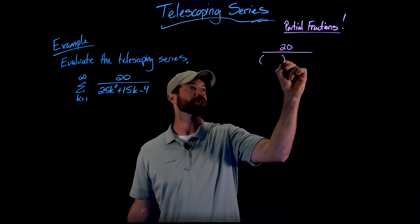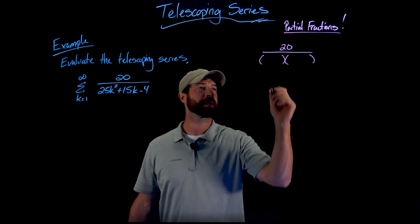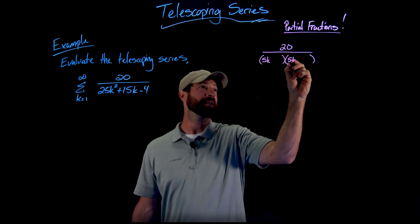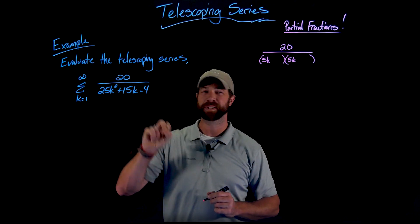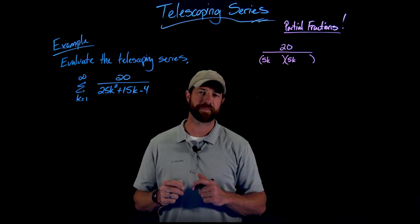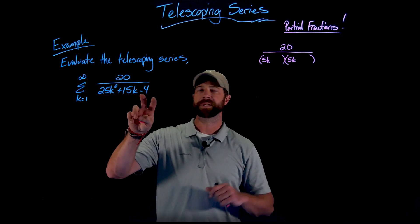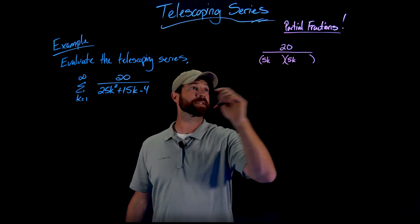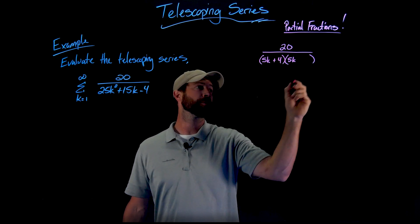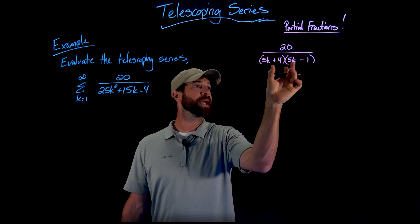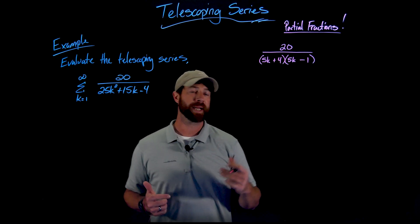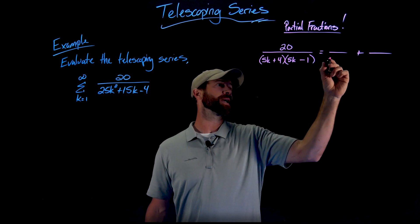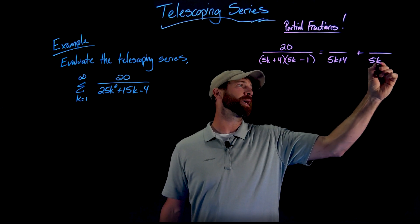Walking through the factoring: we have 25k squared. We could have 25k and 1k, or 5 and 5. This feels like a 5k and a 5k. For the other terms, I need factors that give me plus 1 and minus 4, or minus 4 and plus 1. I actually want a positive 4, so I'll write plus 4 and minus 1, because that gives 20k minus 5k to yield the 15k term. So this factors as 5k plus 4 times 5k minus 1.